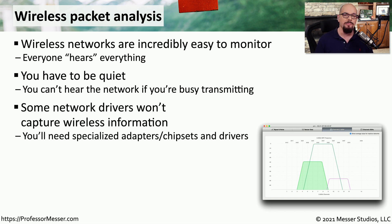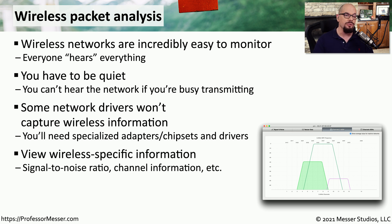Many packet analyzers disable the sending function from your device so you can hear all of the traffic from other devices on the wireless network. Sometimes an operating system or wireless analyzer will only capture information and display it as ethernet frames, but there's also wireless-specific information sent directly from the access point that you'll only see if you have the appropriate drivers or hardware adapters supporting the wireless capture function. You can also use these tools to view the signal-to-noise ratio, channel information, utilization, and other details.